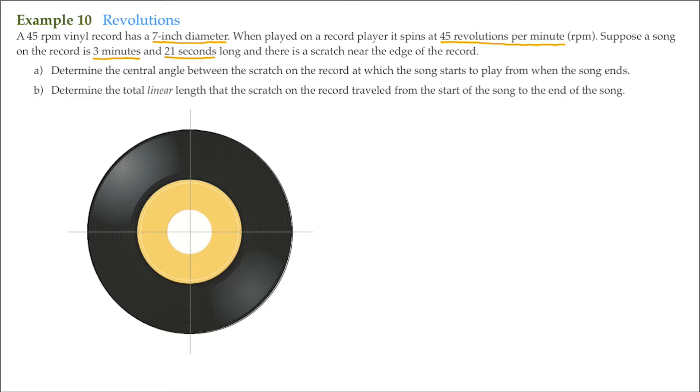For A, it says determine the central angle between the scratch on the record at which the song starts to play from when the song ends. So there's a scratch on the record. I'm just going to put a scratch in here, right here. It doesn't really matter where the scratch is at, but I'm going to put it at the initial point there. So then as this record plays, we want to know by the time the song ends where does this scratch end up.